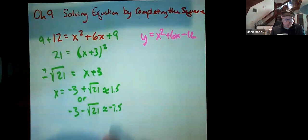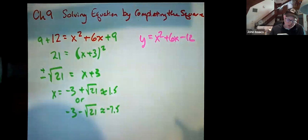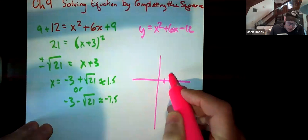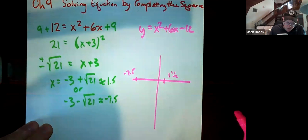So that means that those two values, approximately those two values, are your x intercepts. So if you go to graph this, we might think of our x intercepts as being here at one and a half and over here at negative seven and a half.